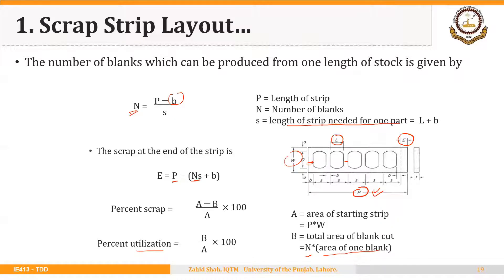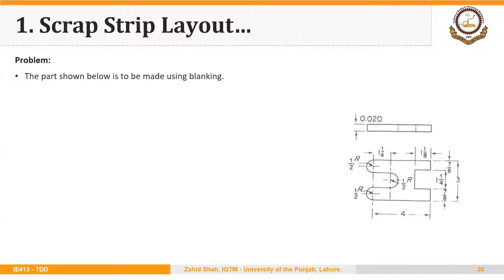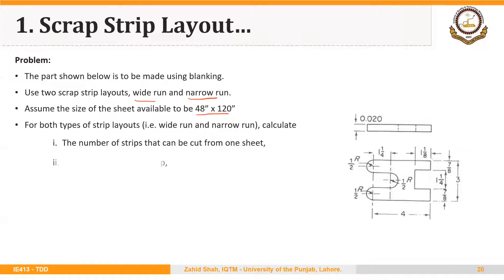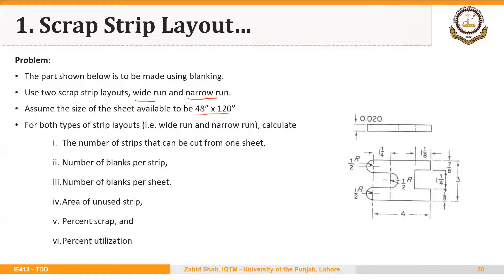Now we will use these formulas in an example. The part shown is to be made using blanking. Use two scrap strip layouts: a wide run and a narrow run. Assume the size of the sheet available is 48 × 120 inches, that is 4 feet × 10 feet. For both types of strip layouts, calculate the number of strips that can be cut from one sheet, the number of blanks per strip, the number of blanks per sheet, area of unused strip, percent scrap, and percent utilization.